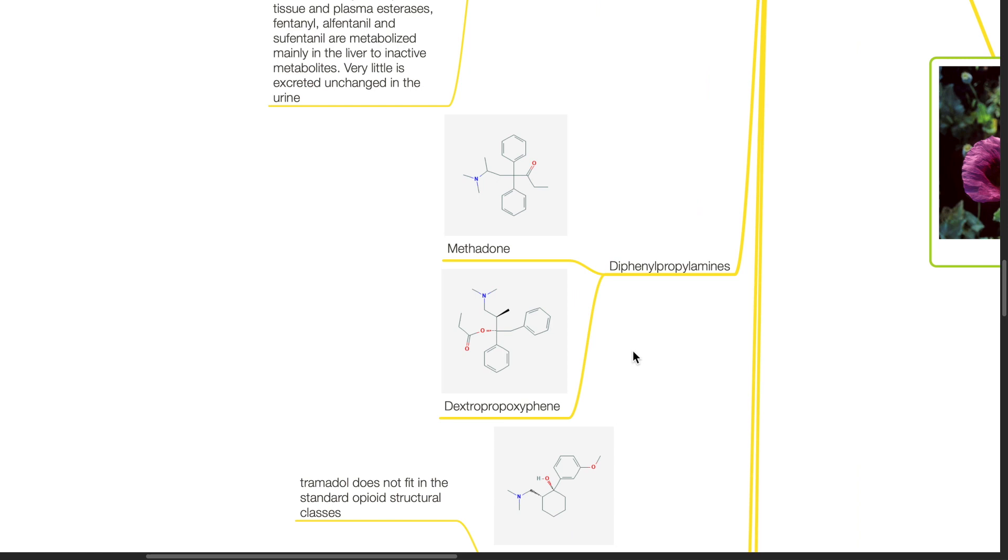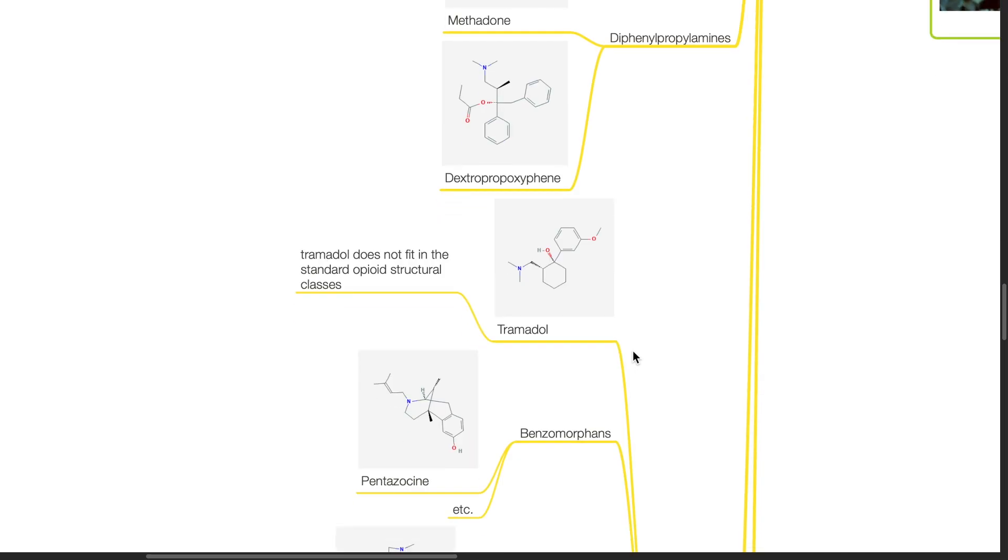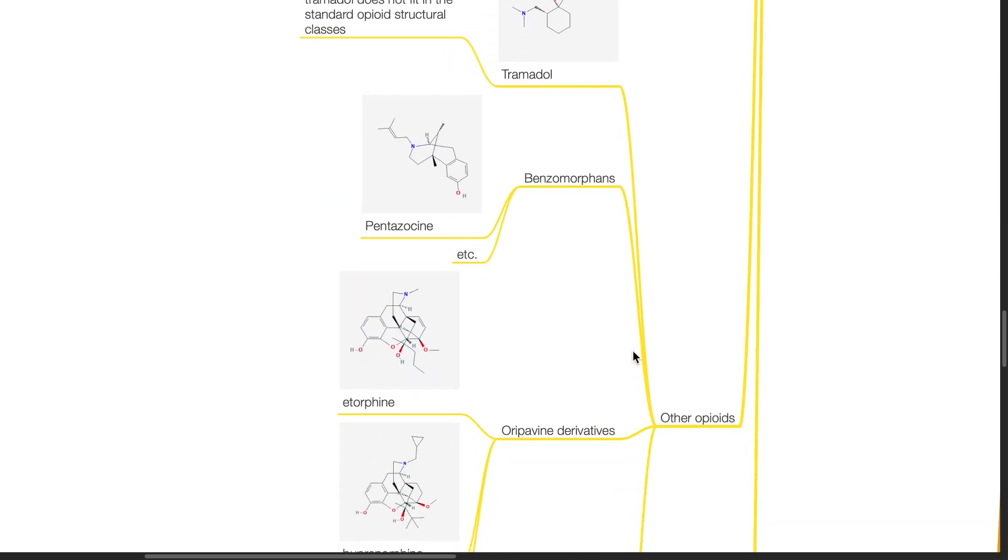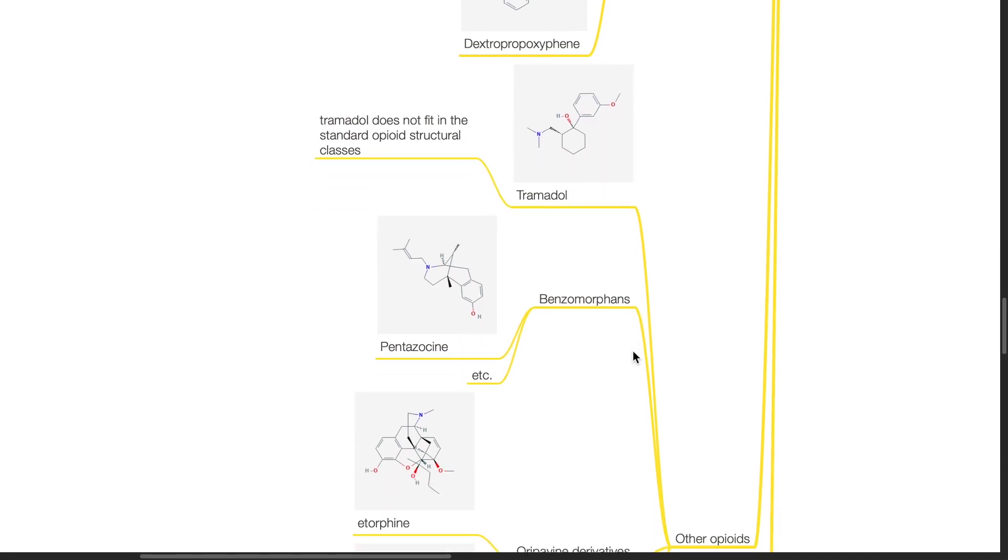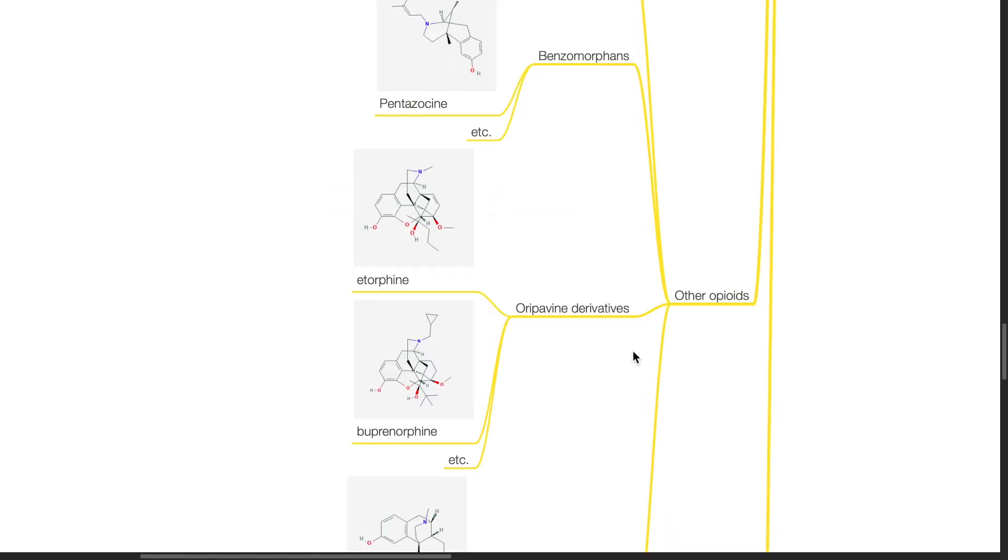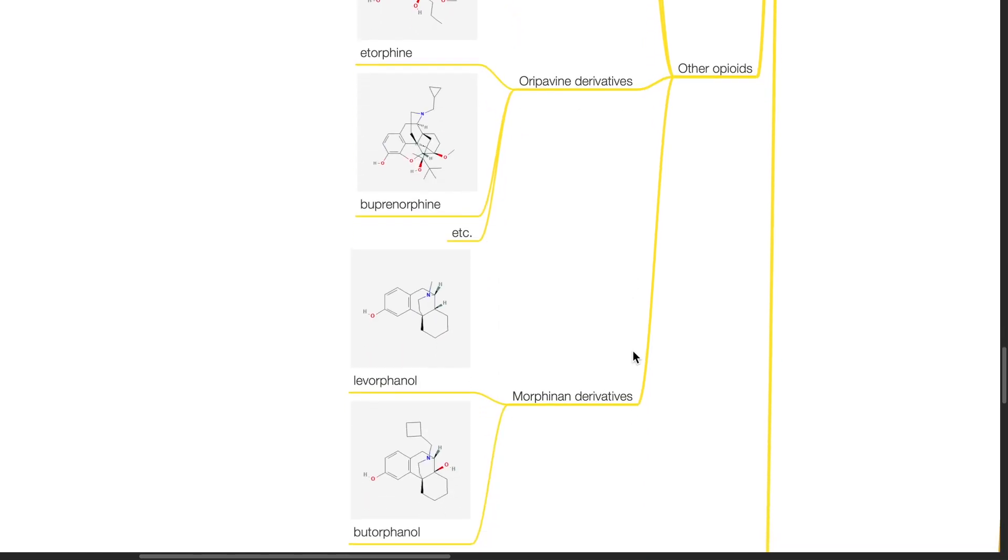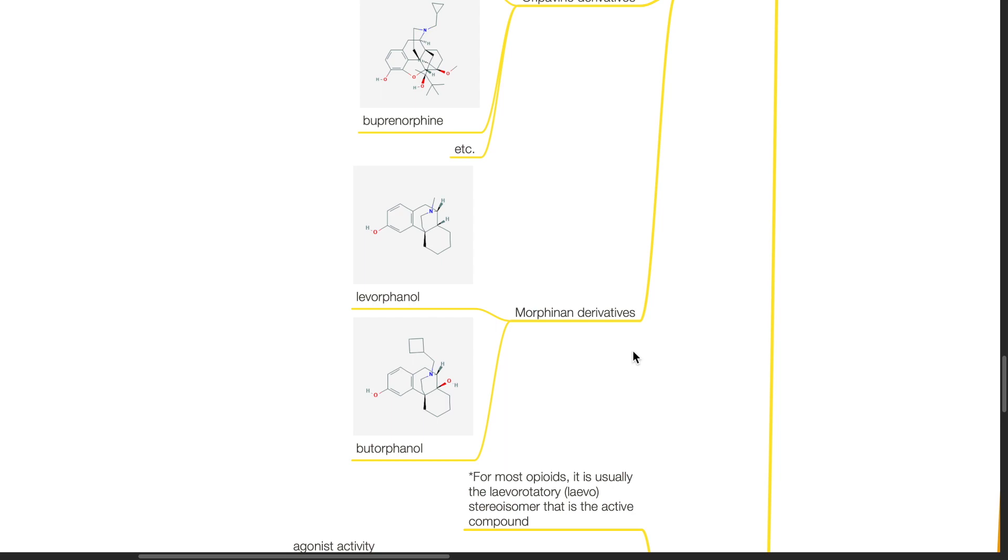Examples of diphenylpiperidines include methadone and dextropropoxyphine. Other opioids include tramadol which does not fit in the standard opioid structural classes, benzomorphan such as pentazocine, oripavin derivatives such as etorphine and buprenorphine, morphinan derivatives such as levorphanol and butorphanol.